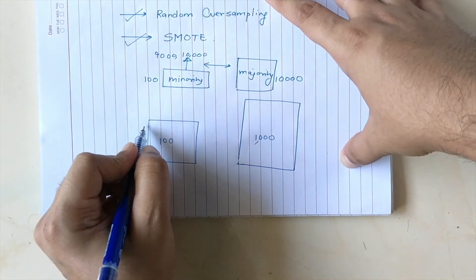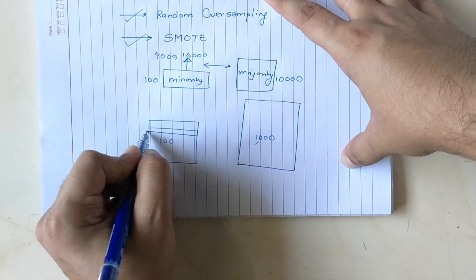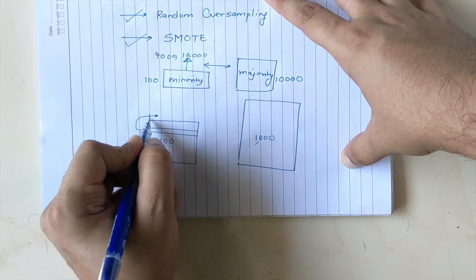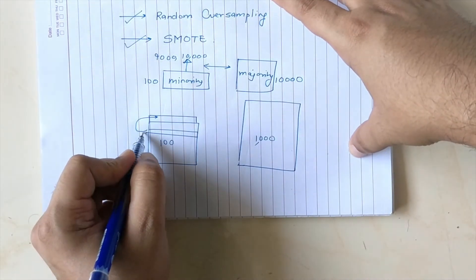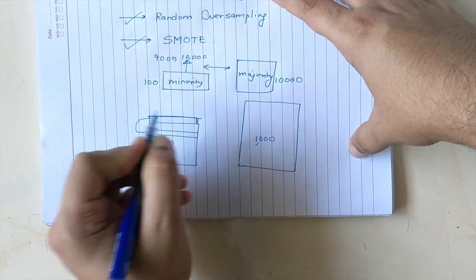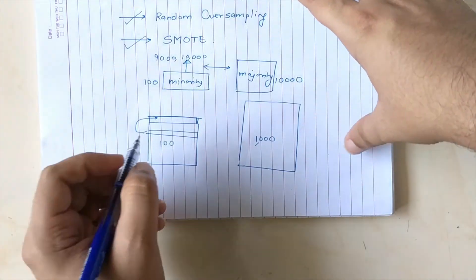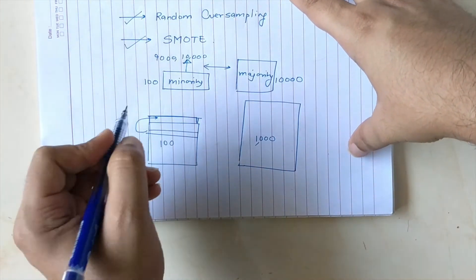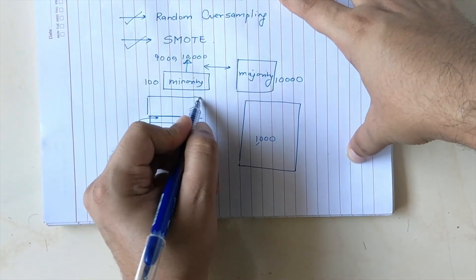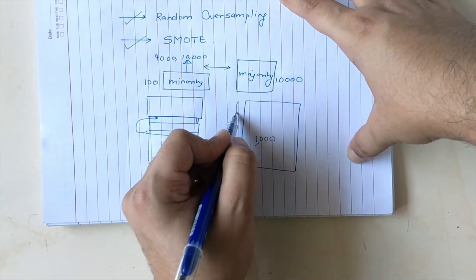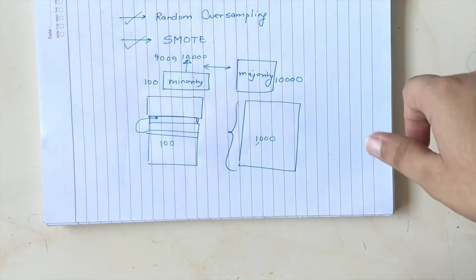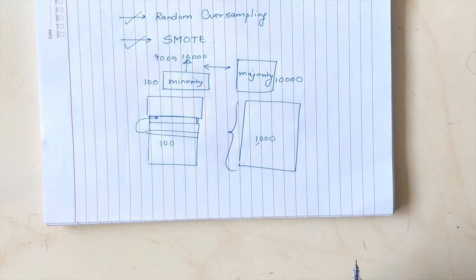You will pick a row randomly from this minority class and put it into the dataset. So I'll first pick up say row number 99, put it up here again, and I'll do this iteratively so that I match the total number of points which are there in my majority class. That is how random oversampling works.